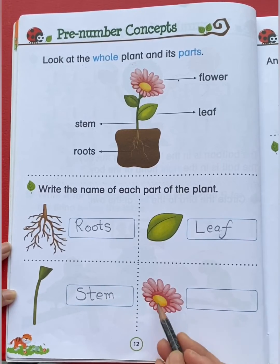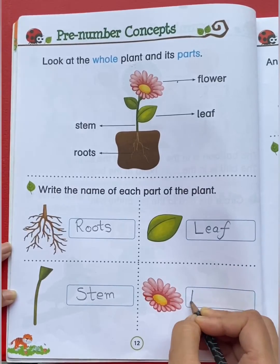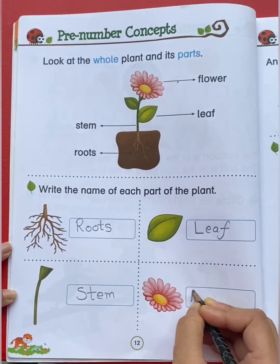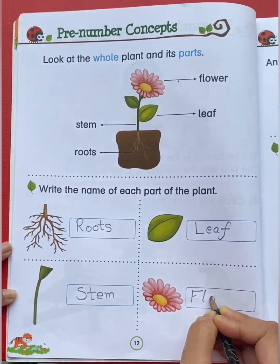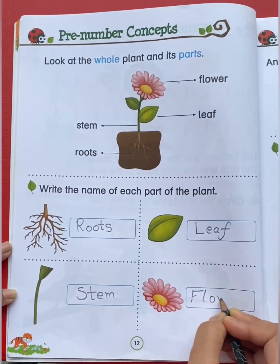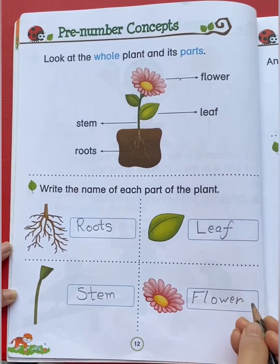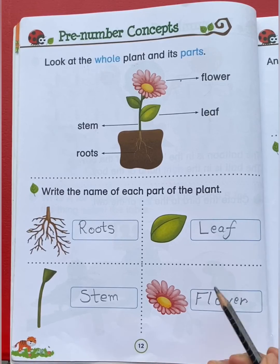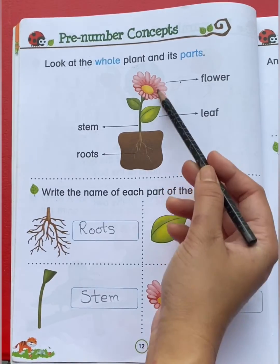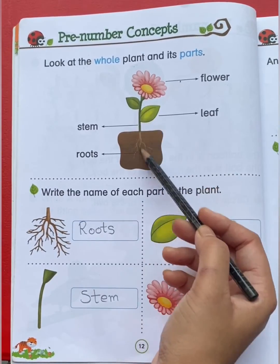And see the last part of the plant — this is a flower. So today we have learned about whole and parts.